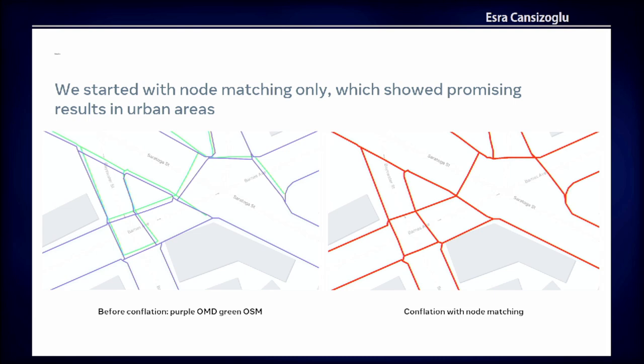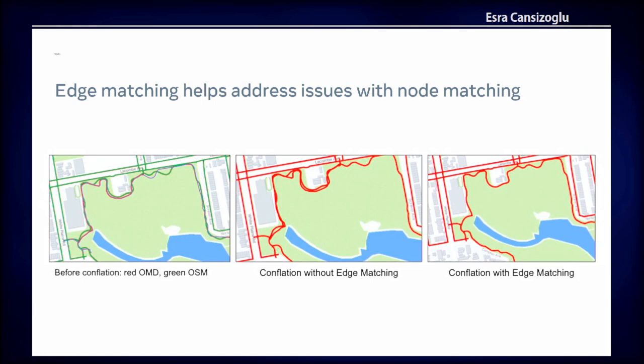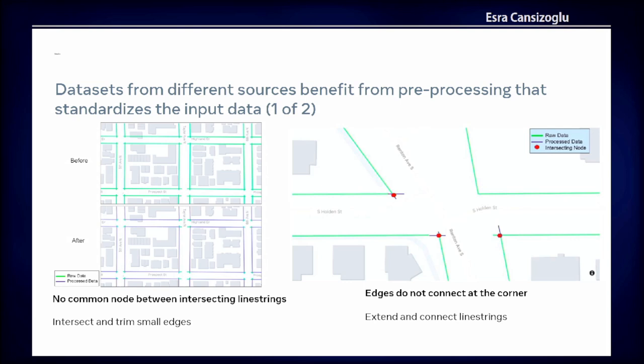Let's take a closer look at the results. Starting with node matching only: we extract intersection nodes from both data sets, do node pairings of intersecting nodes, and apply node matching. The results look pretty good in urban areas. However, with node matching only, there are still some issues — for example, duplicate road segments remain. Applying edge matching as part of the conflation process, as shown in the right image, handles those duplicated parts much better.